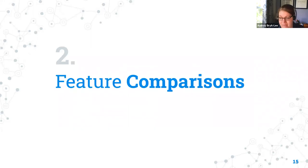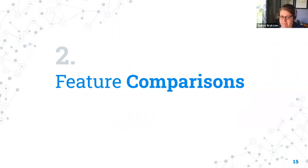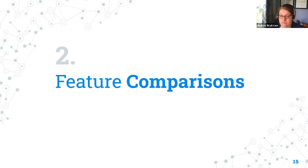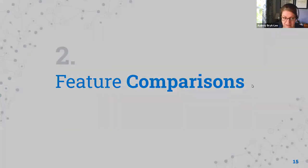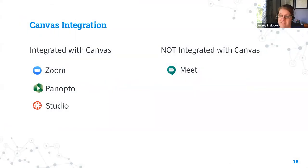That's the tools. Now I want to quickly run through some of the features most important to faculty at UNCG when deciding on a platform. This will give you a chance to compare them more directly, because there might be features or limitations that make you quickly choose or rule out one tool or another. The first is Canvas integration, which is so important to so many of our faculty. Meet is the only one of these tools that's not integrated with Canvas.